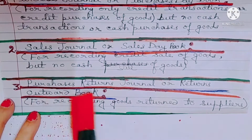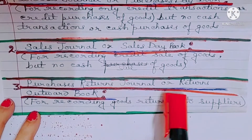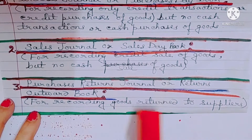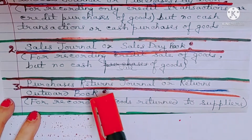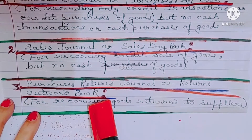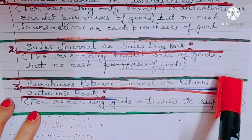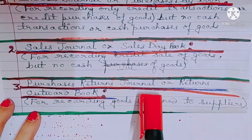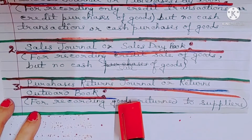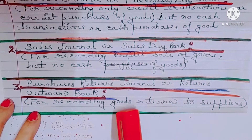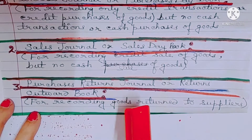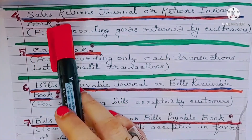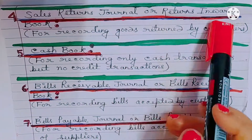Number three: purchases returns journal or returns outward book — for recording goods returned to suppliers. The goods that were purchased and then returned to the vendor are recorded here; only purchase returns are recorded. Number four: sales returns journal or returns inward book.